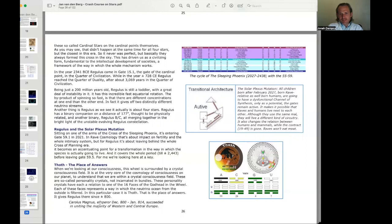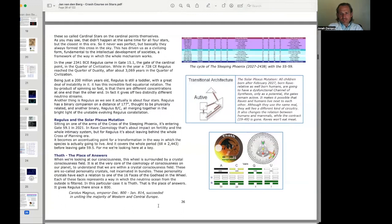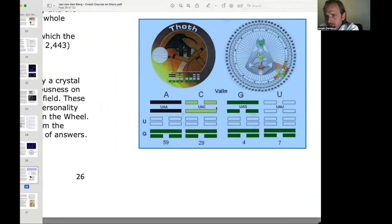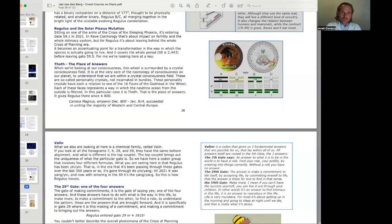Regulus has been there since around 800 Common Era. Carlos Magnus, emperor from 800, December 800 to January 814, succeeded in uniting the majority of Western and Central Europe. That would be Charlemagne. What we are looking at here is a chemical family called valine. If you look at all the hexagrams 7, 4, 29, and 59, they have the same bottom alignment, and what is different is the top couplet. They're all part of the Godhead Thoth, so they're all yin-yang, yin-yin. And then the two on top.